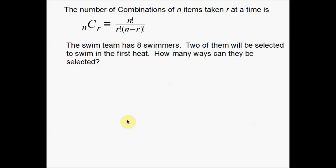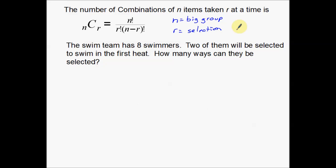Now let's go over a combinations problem. The number of combinations of N items taken R at a time uses a formula very similar to the permutations one. N is again your big group, and R is how many you're selecting. The only big difference is we have an extra R factorial on the bottom, which changes our combinations just a little bit.